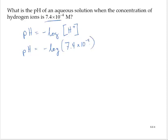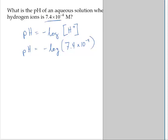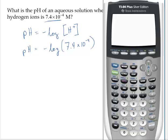And from here, we just calculate it. So bring up the calculator, negative log. And we would type 7.4. Now this is scientific notation.